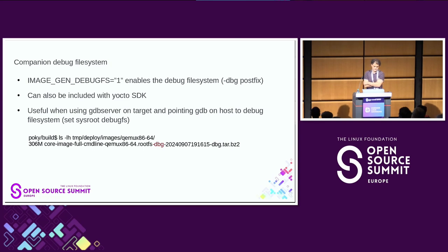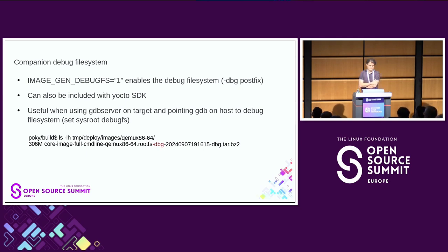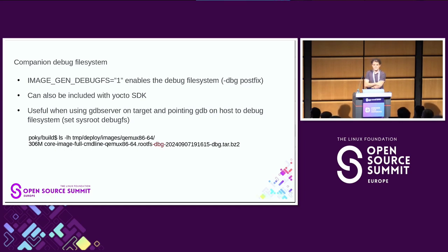One last option often used to deal with debug symbols is to generate the companion debug filesystem with Yocto. This is done using the variable IMAGE_GEN_DEBUGFS, which generates a rootfs with a -dbg postfix containing all debug symbols associated with your normal rootfs. You can also include this with the Yocto SDK — the typical use case being when other teams or customers work only on a single component, you distribute the Yocto SDK including the full debug filesystem. This is useful when using GDB server on target and pointing GDB on your host to the debug filesystem using the set sysroot option.